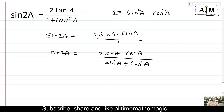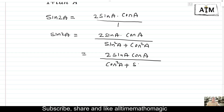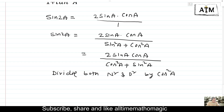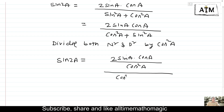After that, this can be written as 2 sin a cos a upon cos square a plus sin square a, writing cos square a first. Now dividing both numerator and denominator by cos square a. So sin 2a equals to 2 sin a dot cos a upon cos square a, divided by cos square a.